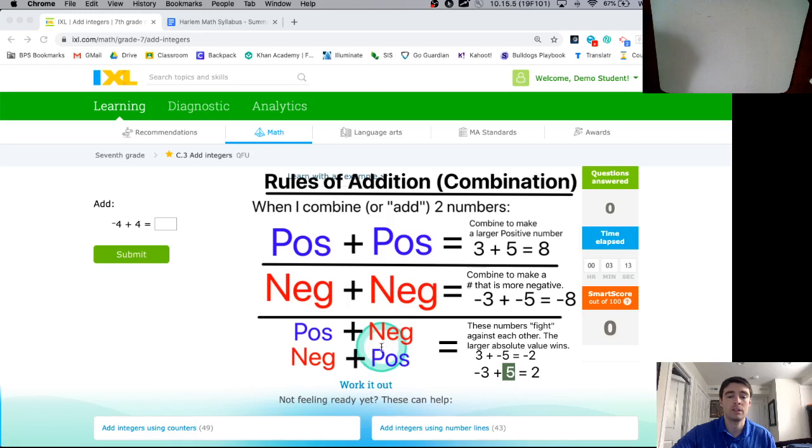So again, whenever you add a positive with a negative, it depends. They'll cancel each other out and then the bigger absolute value will win.